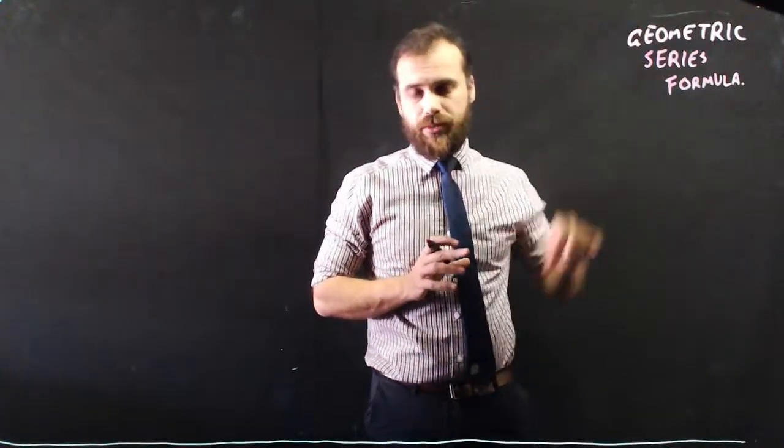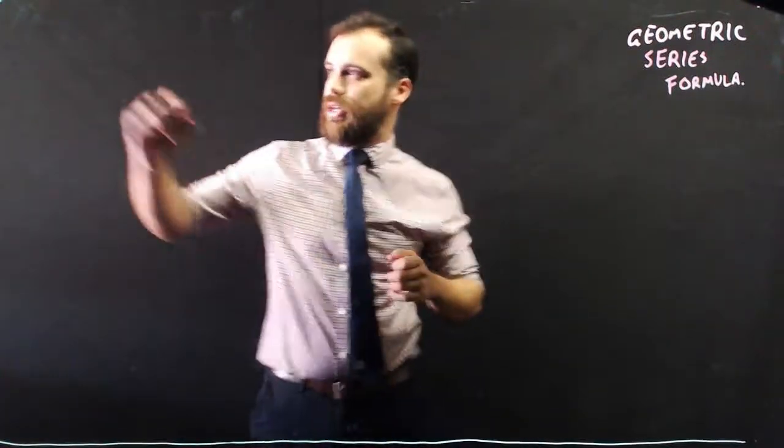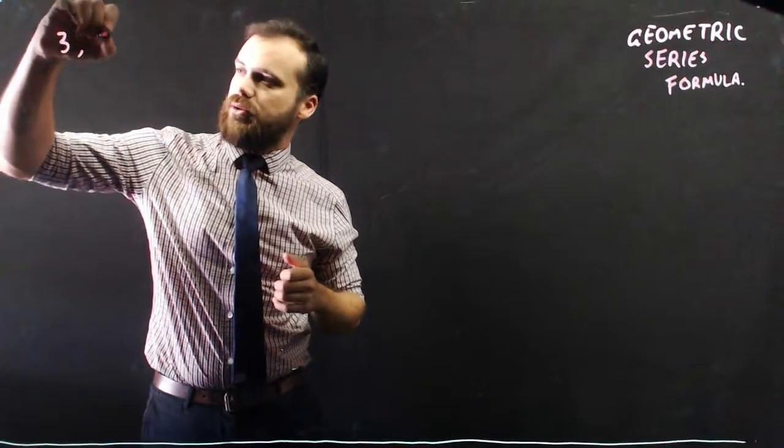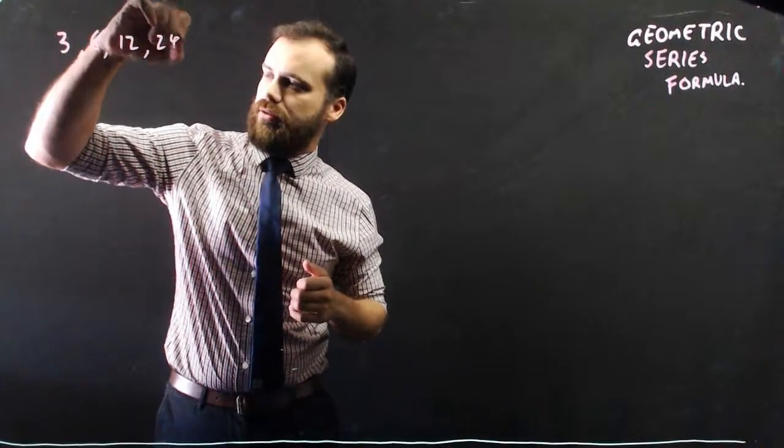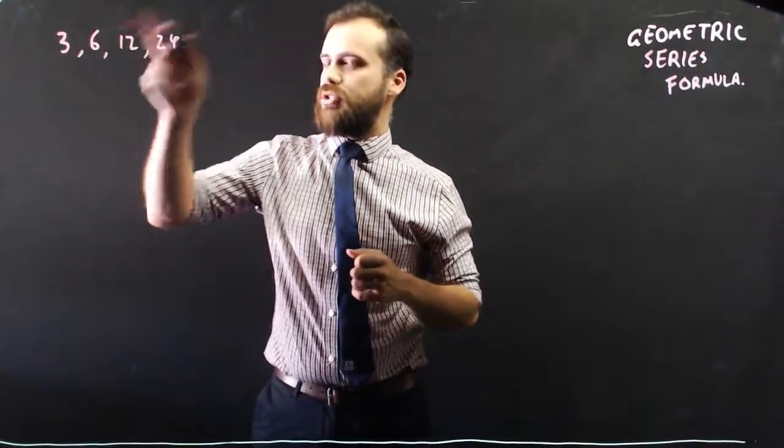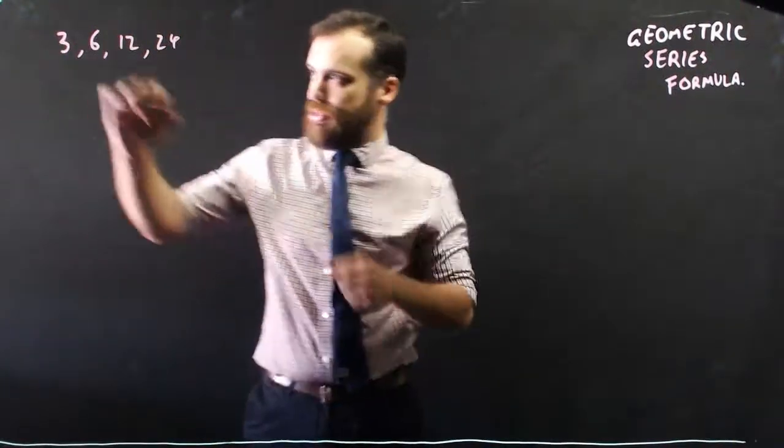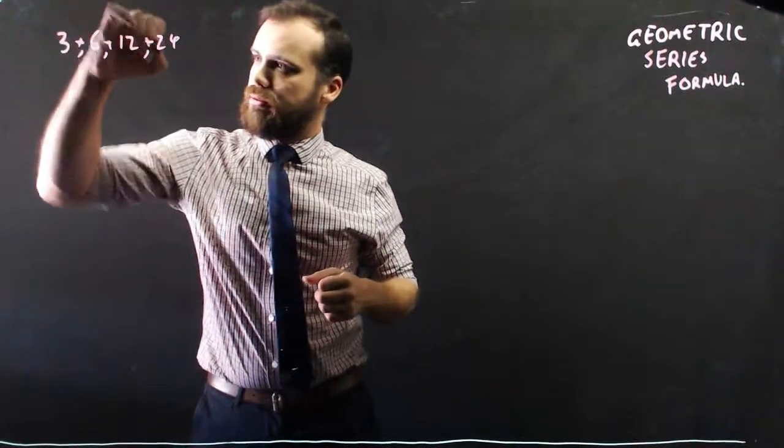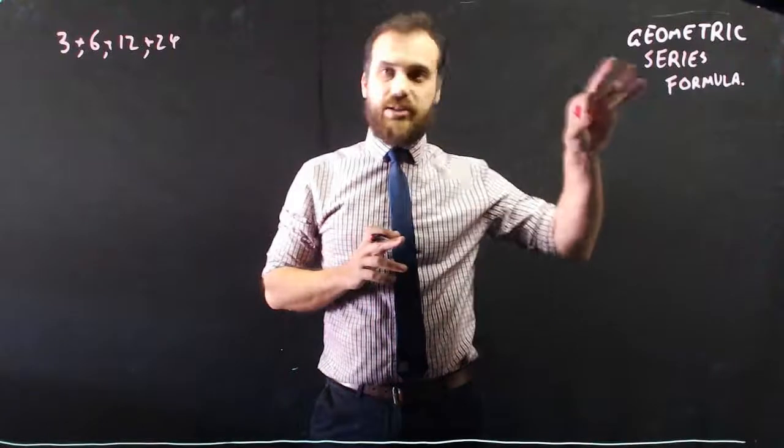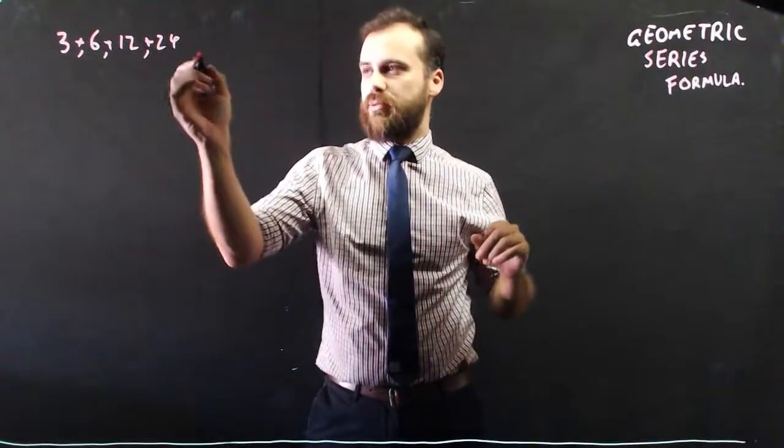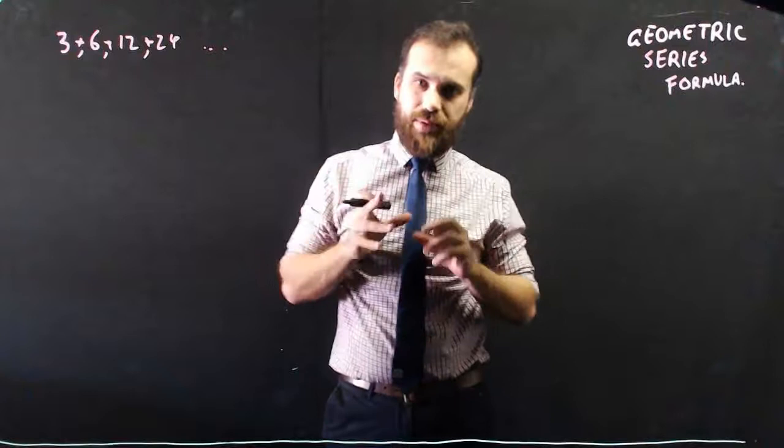So a geometric series formula. A geometric series is where you take a geometric sequence, 3, 6, 12, 24, multiplying it by 2 each time. But instead of commas, we're adding them together: 3 plus 6 plus 12 plus 24. So that's a geometric series. It can go on for as long as you like, and then you figure out what the sum is.